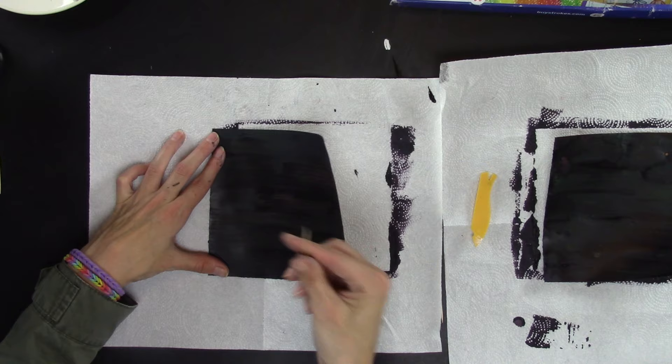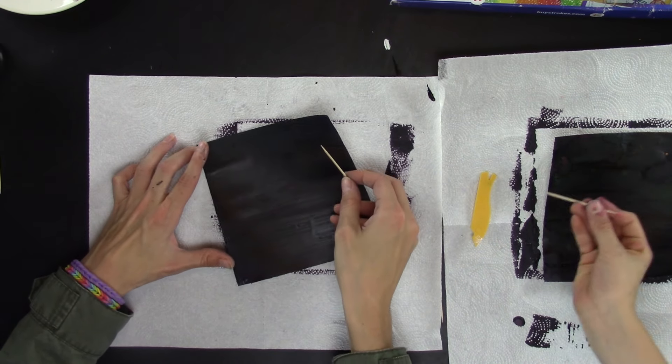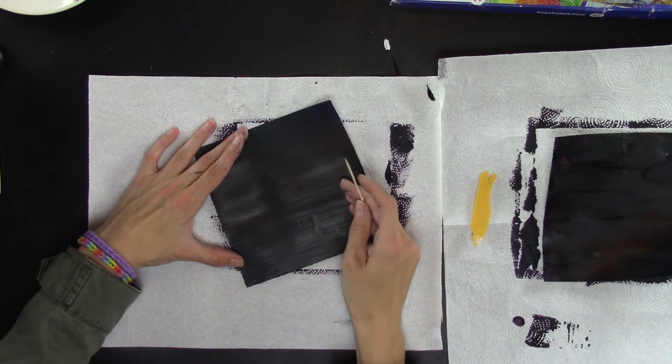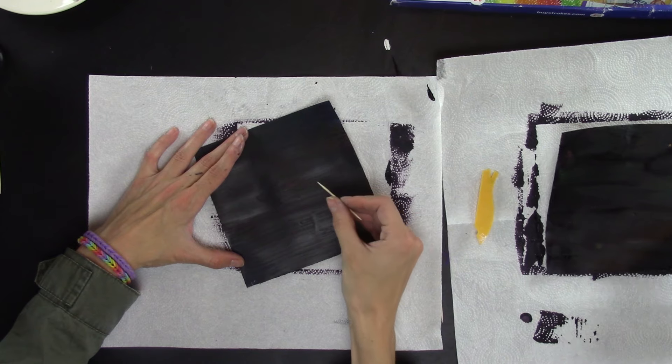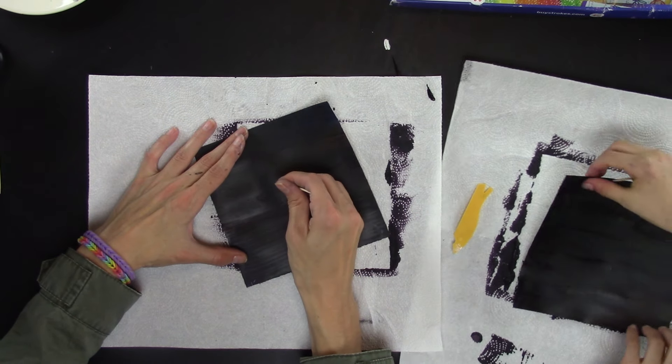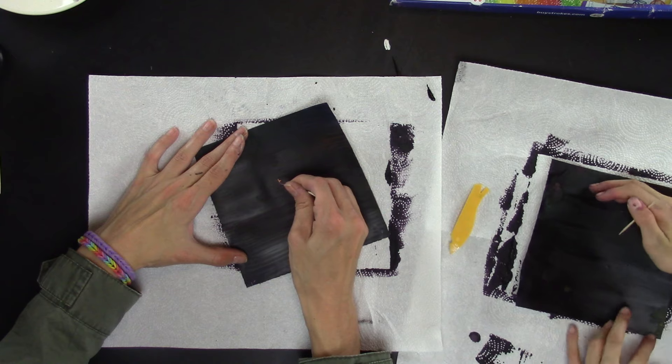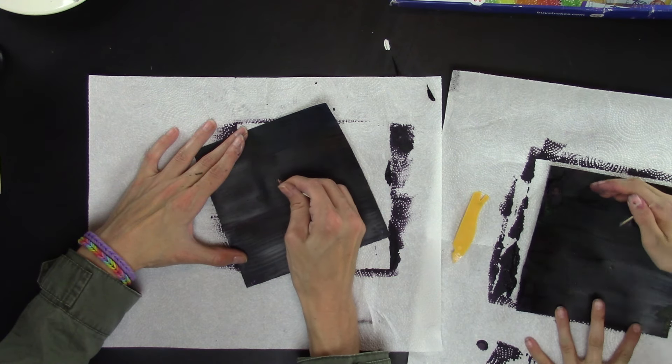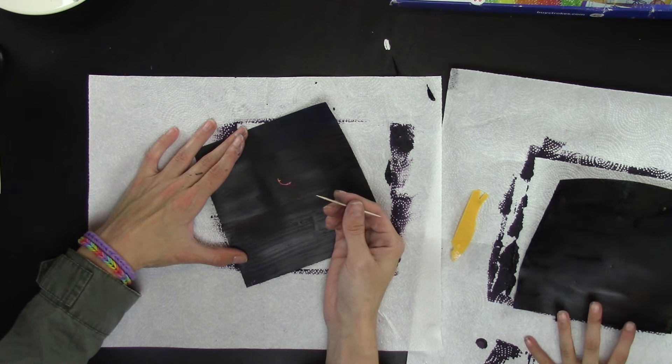Now you're going to grab your toothpick and you're going to turn your paper like this, and you're going to draw a U-shape like that with your toothpick.